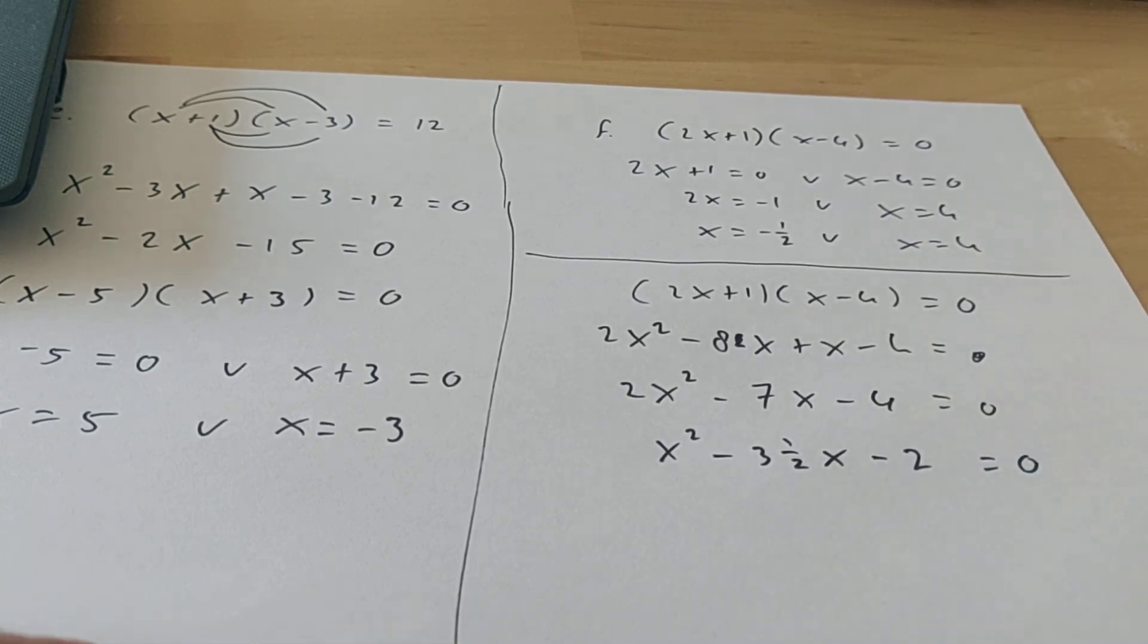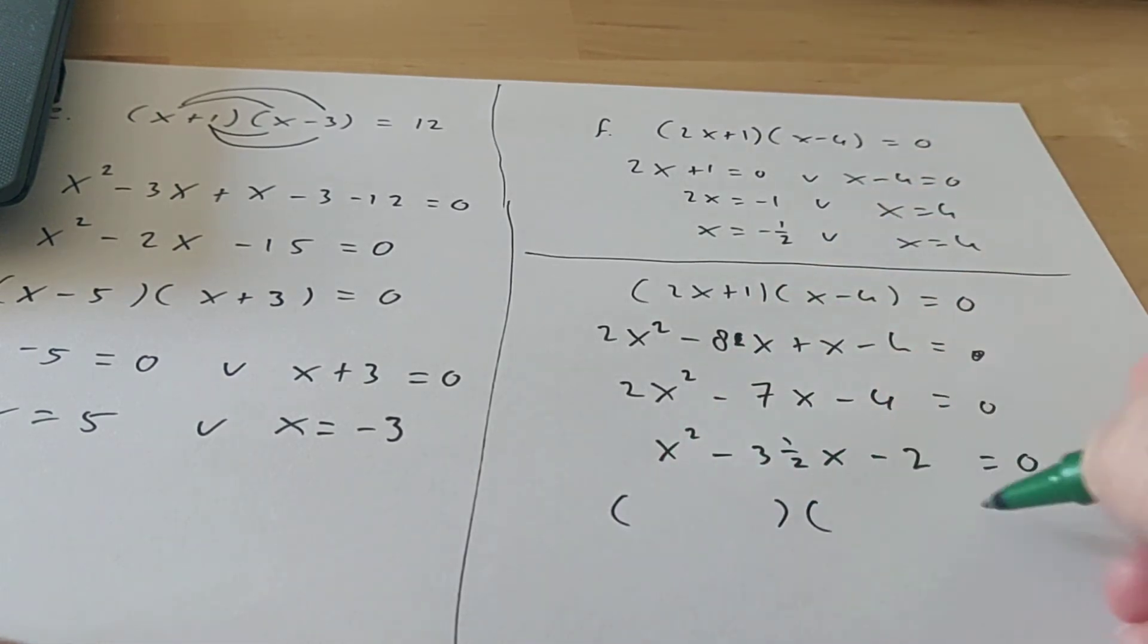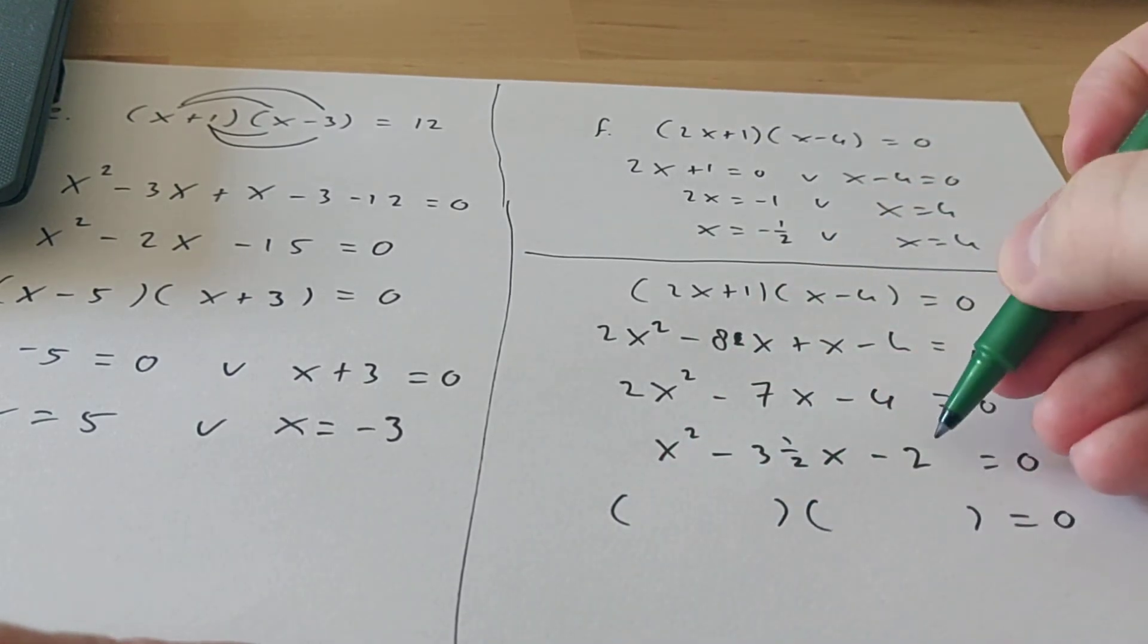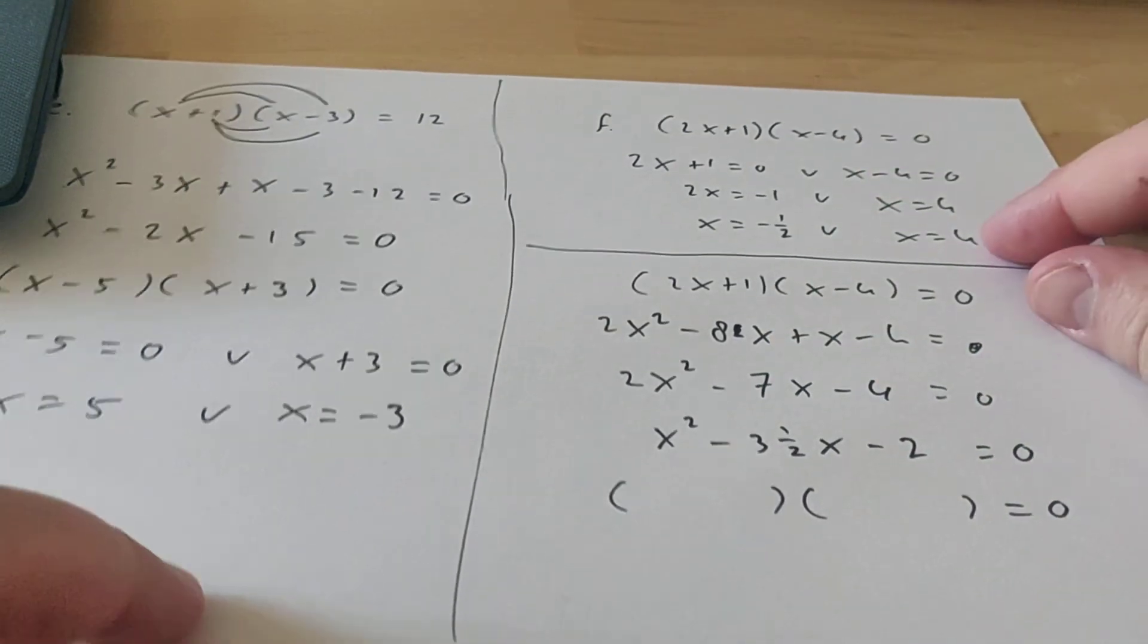As you can see, this is kind of bad. And now you need to factorize this. So you need to find two numbers. If you multiply them, you get 2. And when you add them, you get minus 3 and a half. So that's very difficult to do.